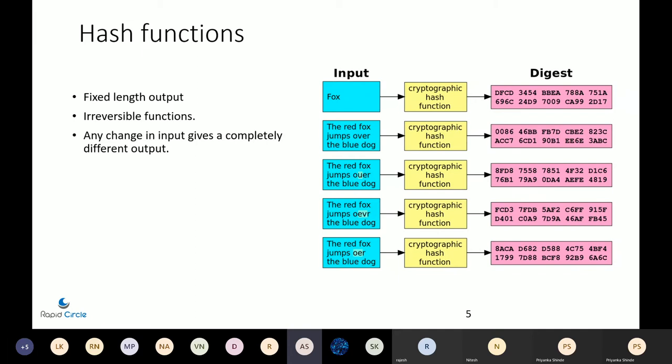We need some mathematics behind it. Hash functions are a mathematical tool that help us anonymize a message and make it irreversible. Any input given into a cryptographic hash function will give us a fixed-length output, no matter what the length of the input is.